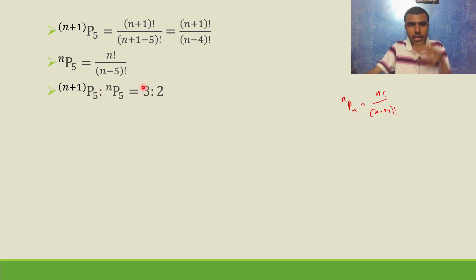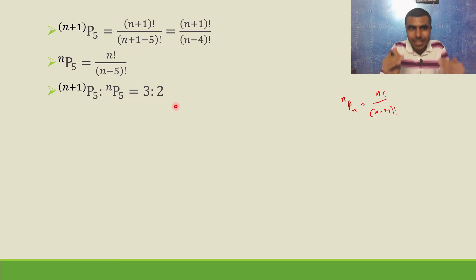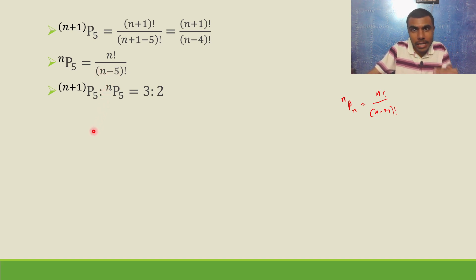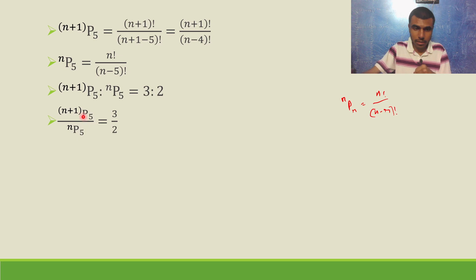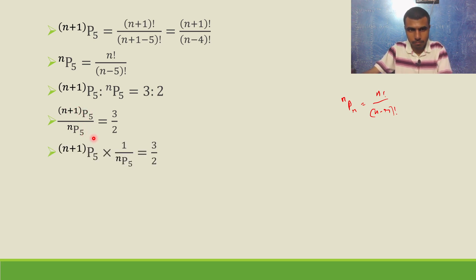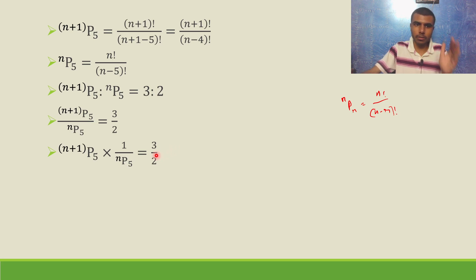Now what did they give? They gave us that n+1 P5 to nP5 is 3 to 2. This means n+1 P5 divided by nP5 is equal to 3 by 2. So I can write n+1 P5 multiplied by 1 by nP5 equal to 3 by 2.